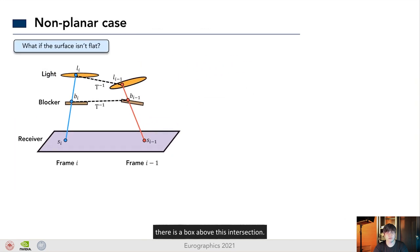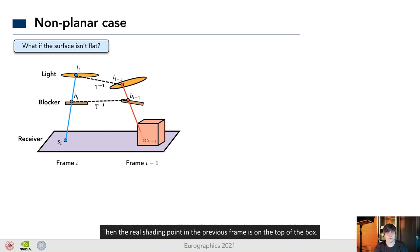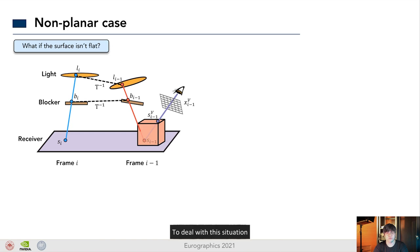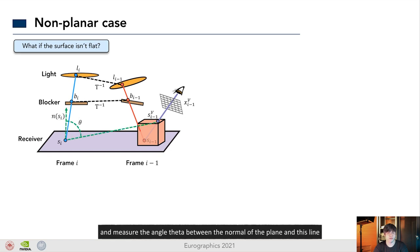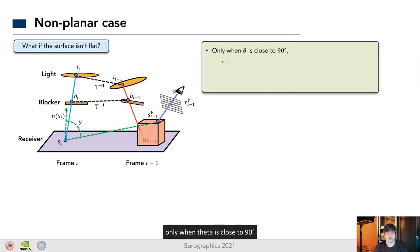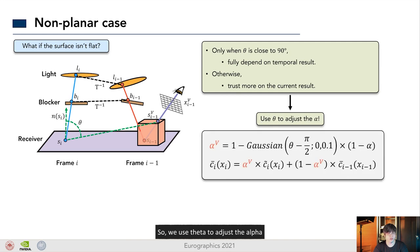Note that the only assumption we made is that the geometry is a locally flat surface. But what if its surface isn't flat? For example, there is a box above this intersection. Then, the real shading point in the previous frame is on the top of the box. To deal with this situation, we introduce a simple but effective fall-off heuristic. That is, we measure the extent of non-planarity. We connect these two shading points and measure the angle theta between the normal of the plane and this line. Our key observation is that only when theta is close to 90 degrees, we can fully depend on the temporal result. Otherwise, we should trust more on the current results. So, we use theta to adjust the alpha. Finally, we achieve high quality and no lagging shadows.